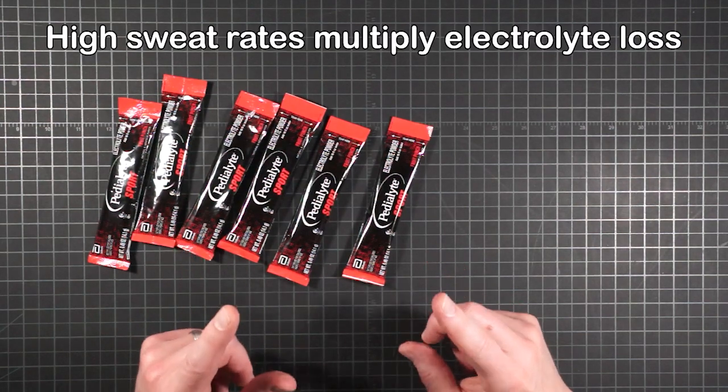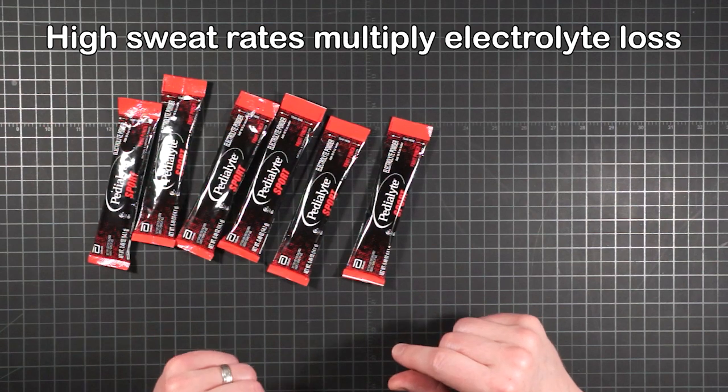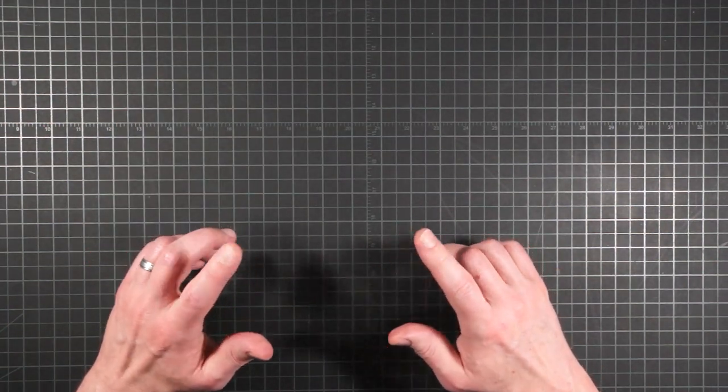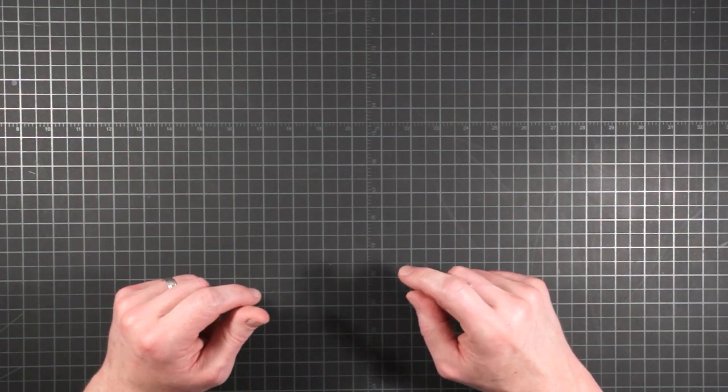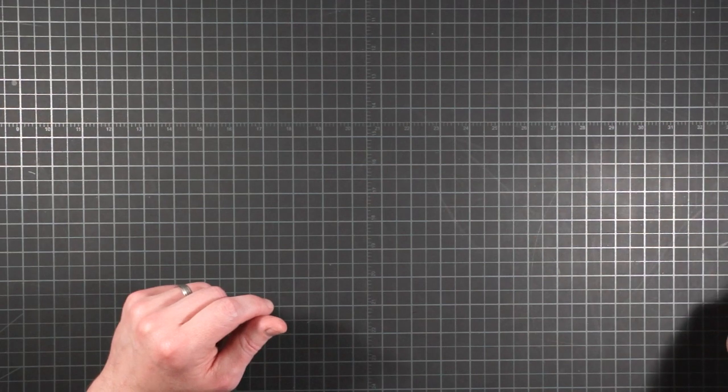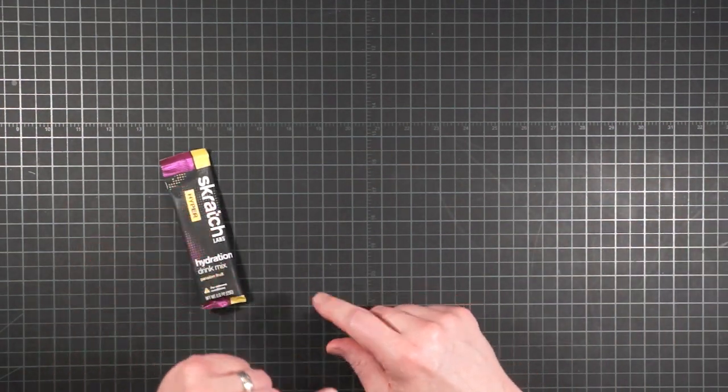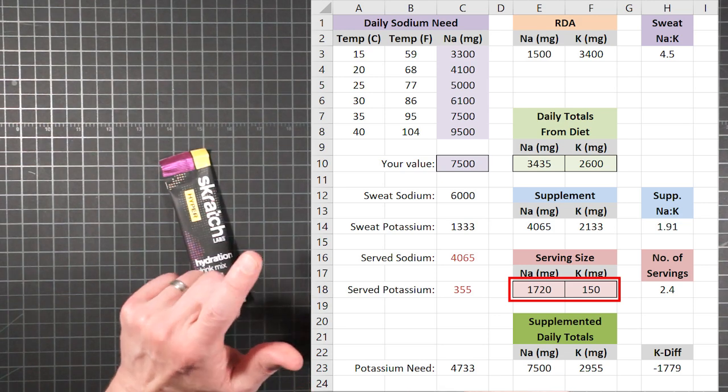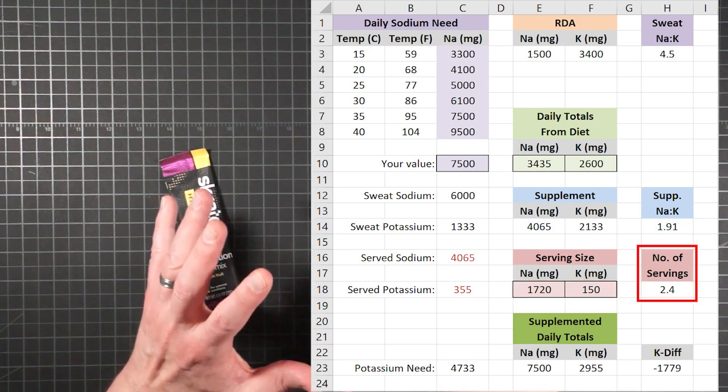So even with my saltier menu and the higher potency electrolyte packets, we've now got to carry more than six of these per day to reach that 7500 milligrams. High sweat rates increase electrolyte loss exponentially, and this is a dangerously high temperature. So if you're really looking to minimize the number of packets you'll have to carry in hot climates, try sorting the chart by sodium instead of the NAC ratio.